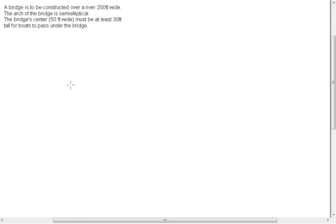So here is a diagram to explain what's going on in this problem. We have a river 200 feet wide. So from here to here is 200 feet.